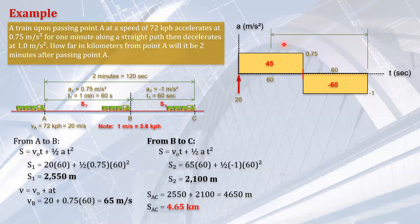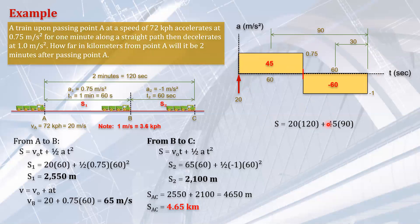So the distance S is the moment of all these vectors at the 120-second point. That will be: 20 times 120, plus 45 times 90, plus negative 60 times 30. The moment arm for the initial velocity vector is 120; the centroid of the first acceleration block is at 30 seconds from A, so its arm to 120s is 90; and the centroid of the deceleration block is at 90 seconds, so its arm is 30. This gives 4,650 meters or 4.65 kilometers.